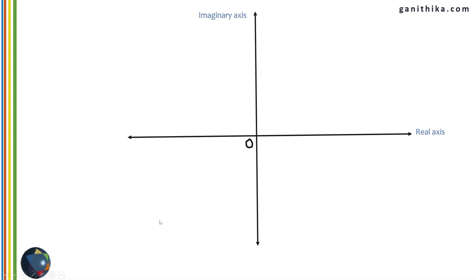On an Argand diagram, the real axis is the horizontal axis on which you will have all real numbers, and the vertical axis is the imaginary axis on which you will have imaginary numbers — i2, i3, i4, etc. on the positive imaginary axis, and −i, −2i, −3i, etc. on the negative imaginary axis. Any complex number x + iy will be a point with coordinates (x, y). This is how you represent any complex number on the Argand diagram.